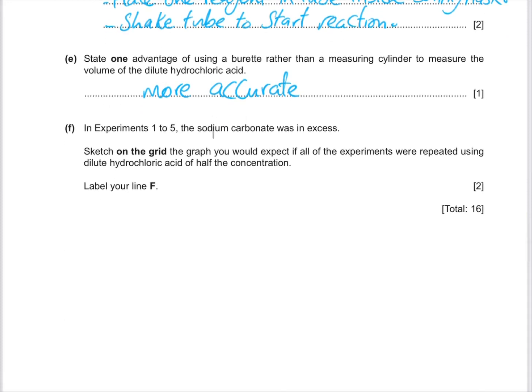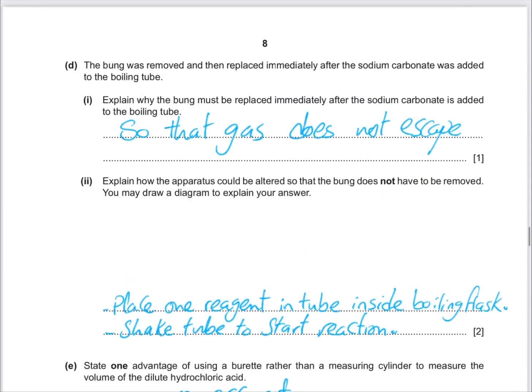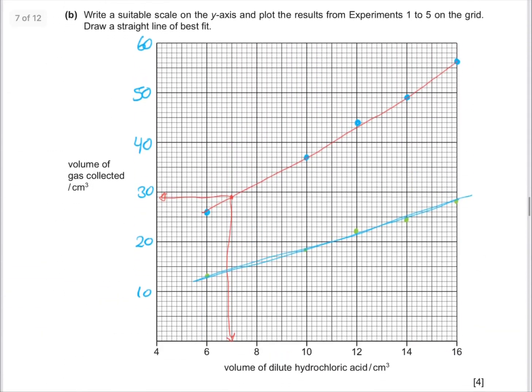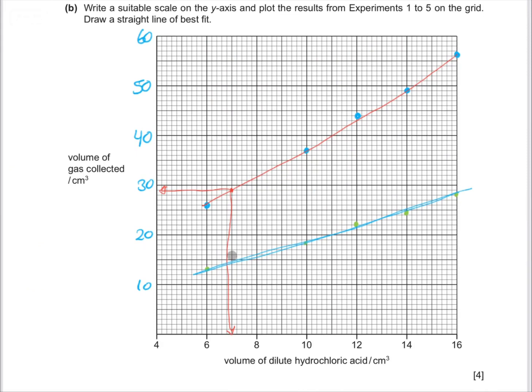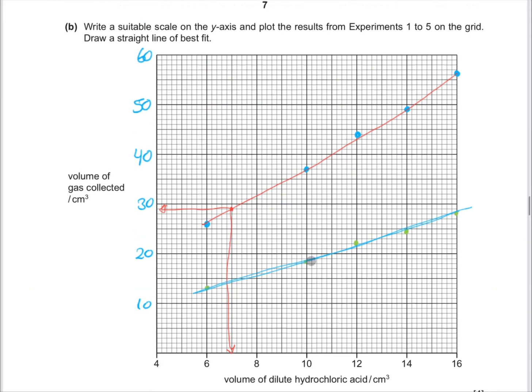After that, we're going to repeat the experiment from 1 to 5. The sodium carbonate was in excess. We're going to repeat the experiment using dilute hydrochloric acid half the concentration. The curve will be the same thing, everything is half. So this one, when it was 26, it will be 13. All values will become half.